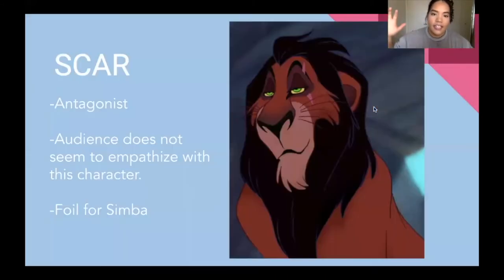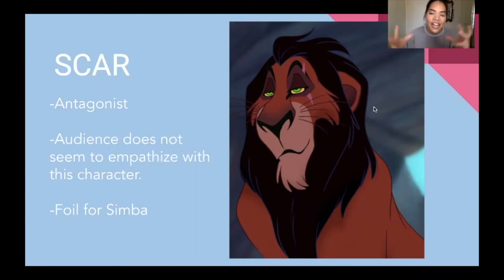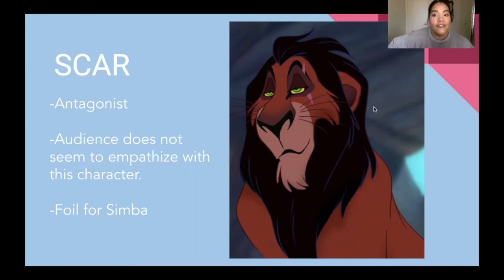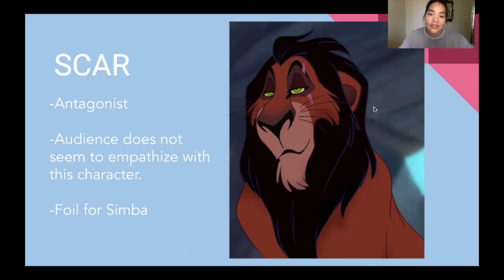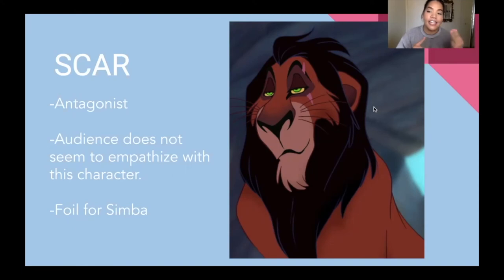Next we have the foil to Simba: Scar. Scar is the antagonist of the narrative — the one impeding or negating the action. The audience doesn't empathize with Scar; we don't want to see him win. We get catharsis seeing Scar fail. He is also a foil for Simba — the more we see Scar's plotting ways, the more we empathize with Simba, and vice versa.